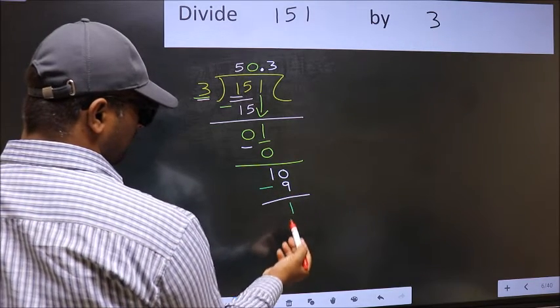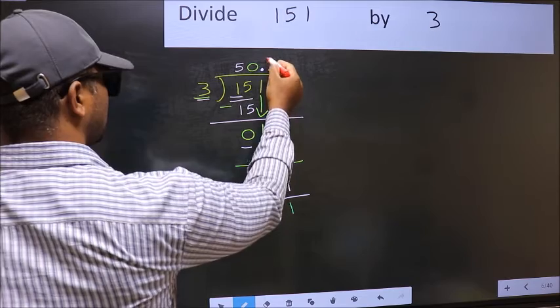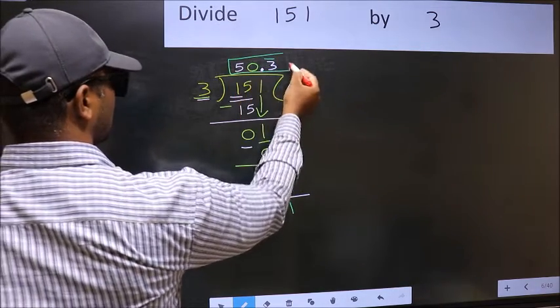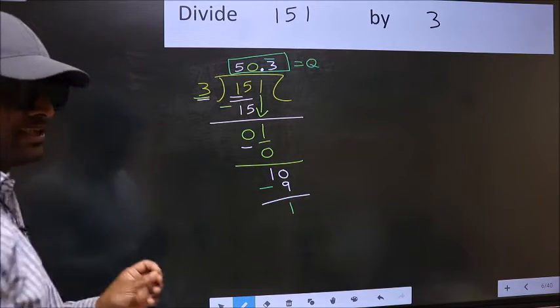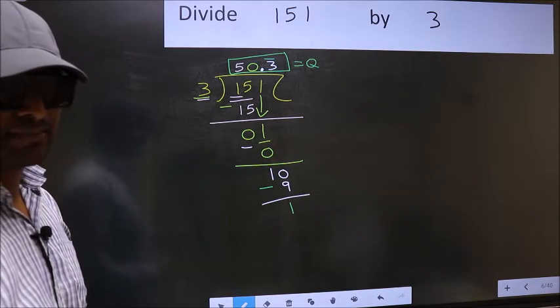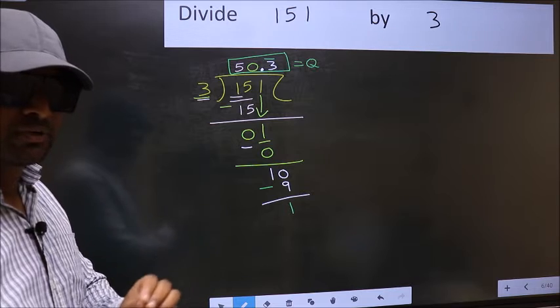We got 1 again. That means we get bar on this number. So, this is our quotient. Did you understand where the mistake happens? You should not do that mistake.